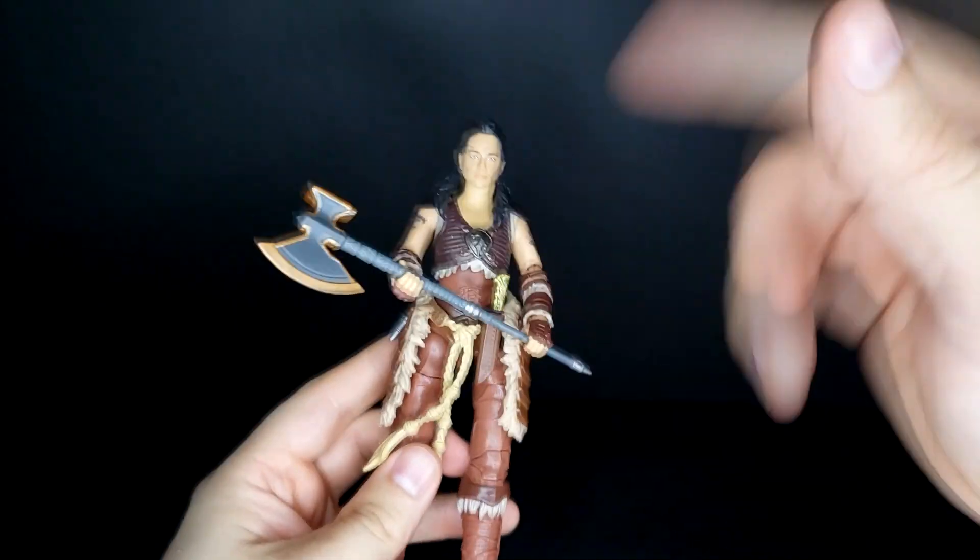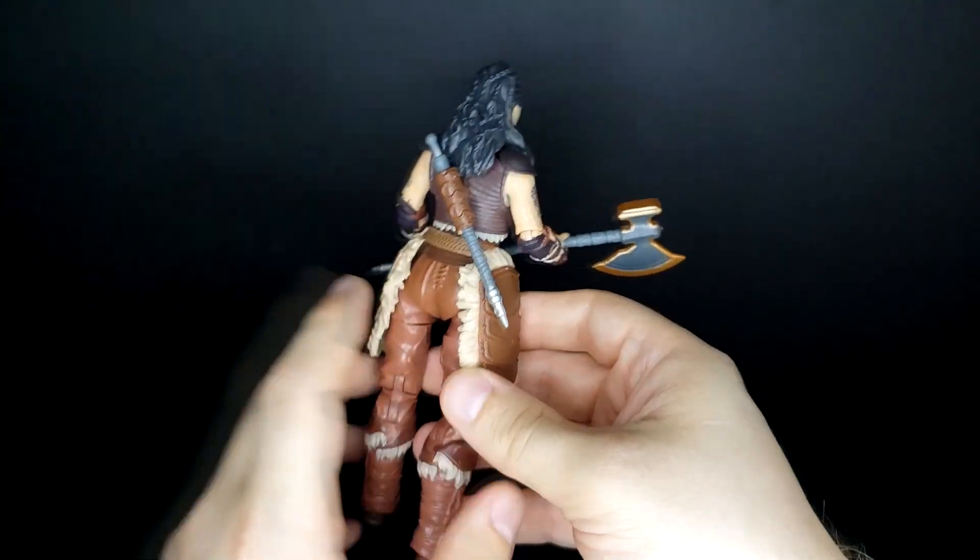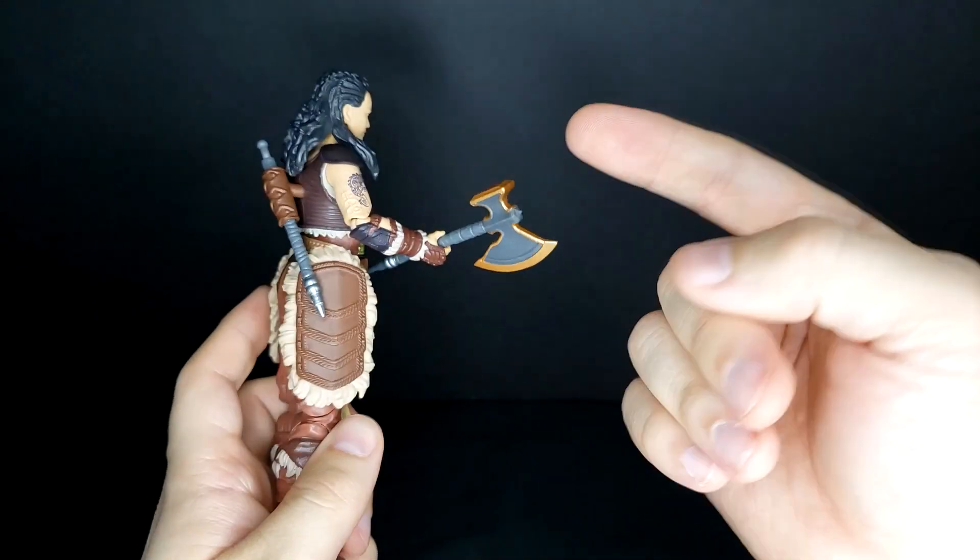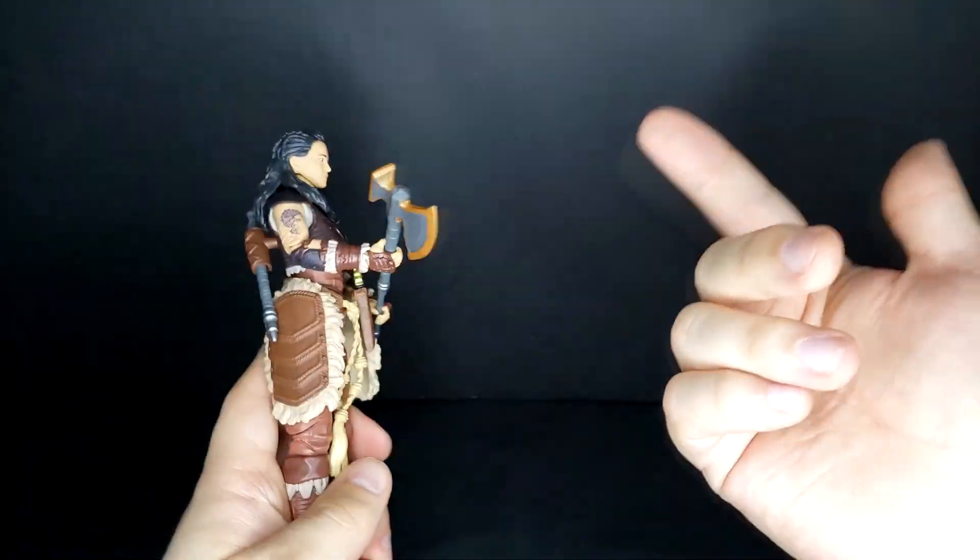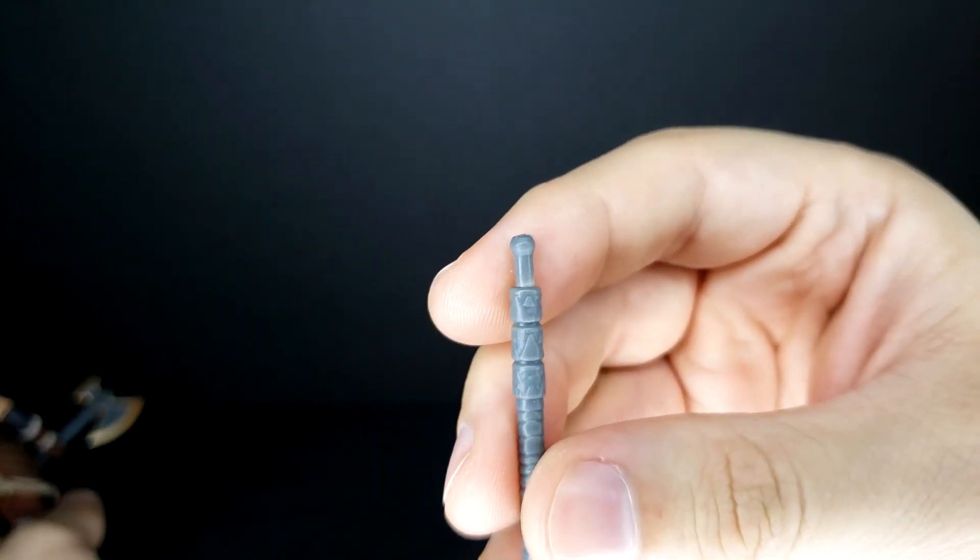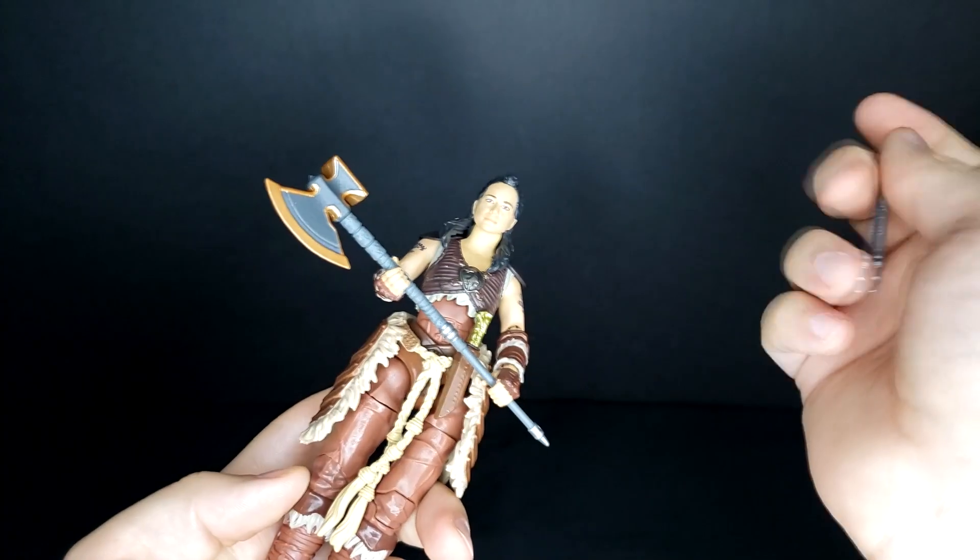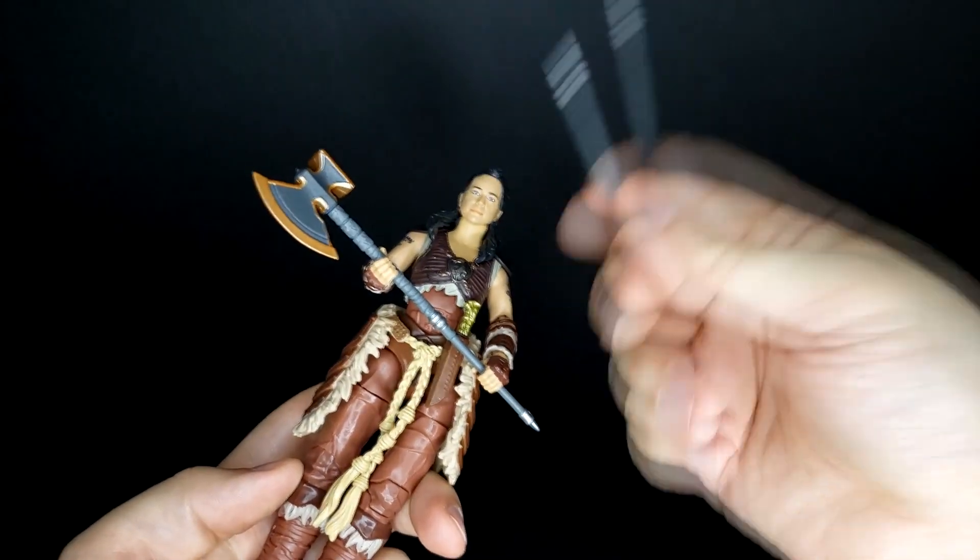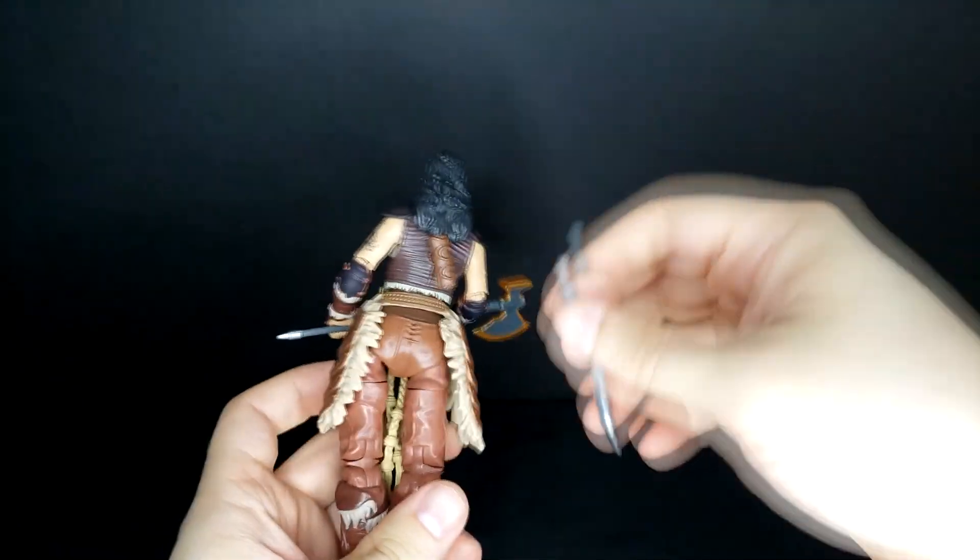Other than the face my only kind of gripe with this figure is the way that the axe works. Because in the movie it's a retractable axe. So here they just give you two sticks and one axe head. The problem is as you can see from the horrible stress marks on here, changing the axe head is not easy to do. It's a pain in the butt. Stresses stuff out. I put it on the long one and I'm leaving it there forever.